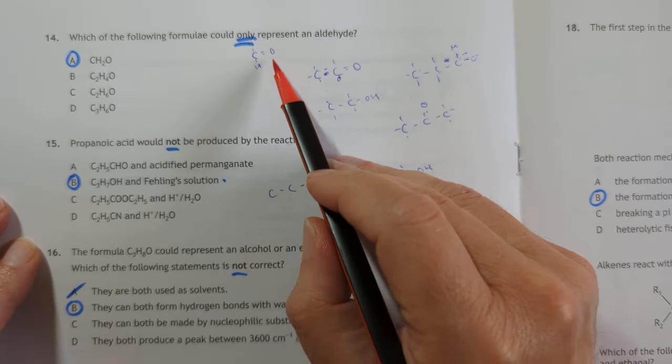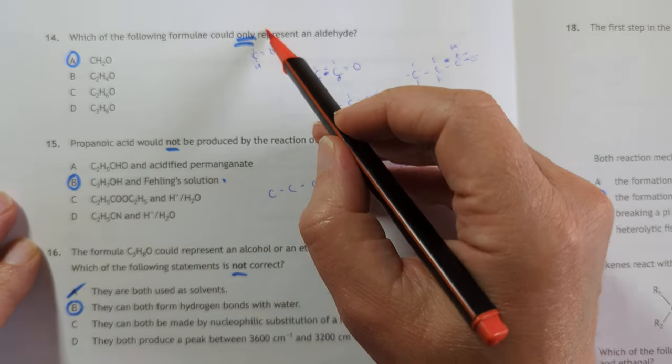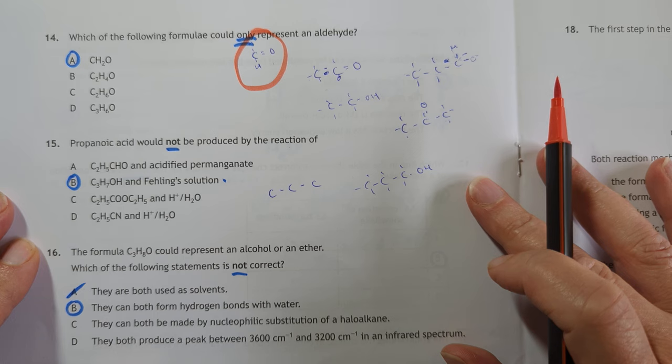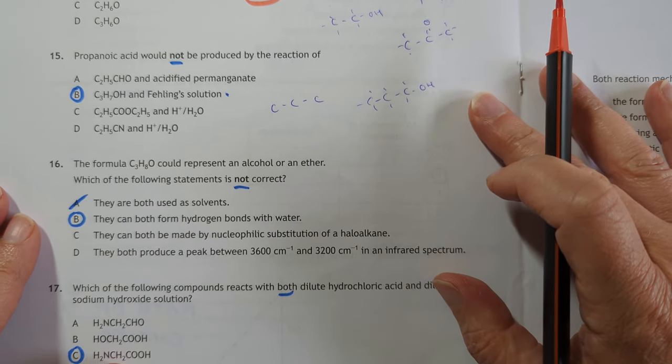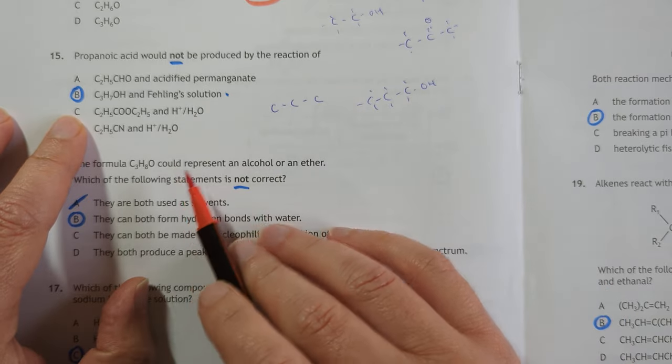If maths is not its strong suit, that might cause a bit of a headache. Which of the following could only represent an aldehyde. It's got to be the simplest version, as this person here has done it. I don't know whose this is, actually. Whose paper this is. But yeah, they've done it right. So, it's A.